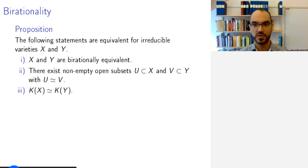And both these conditions are equivalent to the statement that X and Y have the same field of rational functions. So why is that? Well, 2 implies 3 because K(X)